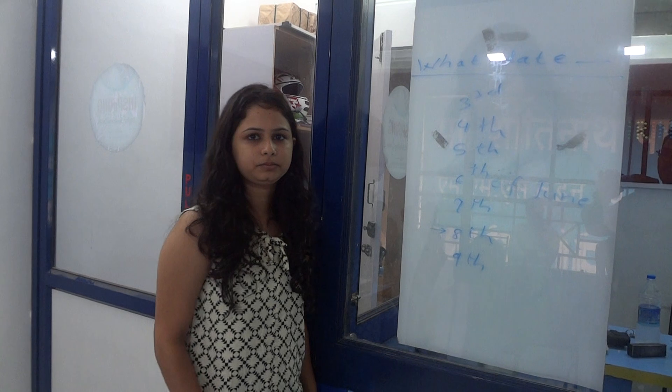What date will be tomorrow? It will be 10th of June tomorrow. What date is today? It is 8th of June today. What date was the day before yesterday? It was 8th of June the day before yesterday. What day will be tomorrow? It will be 11th of June tomorrow.